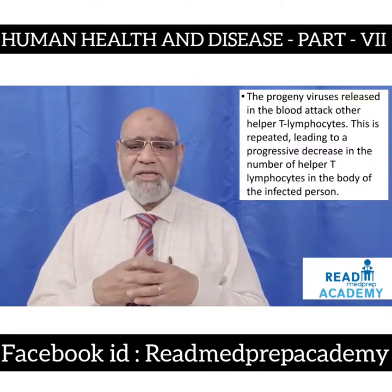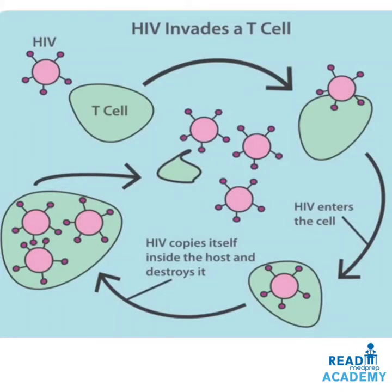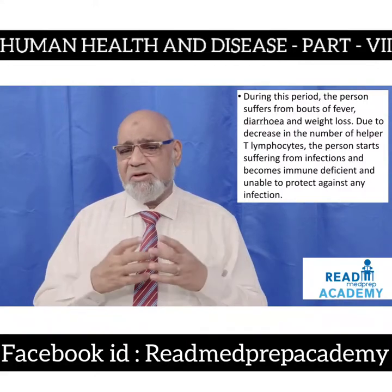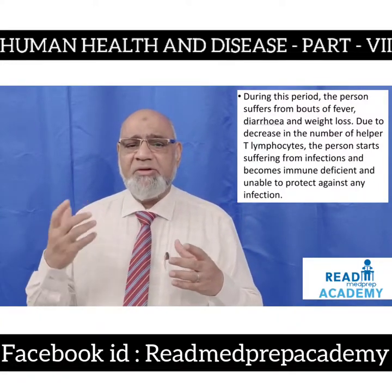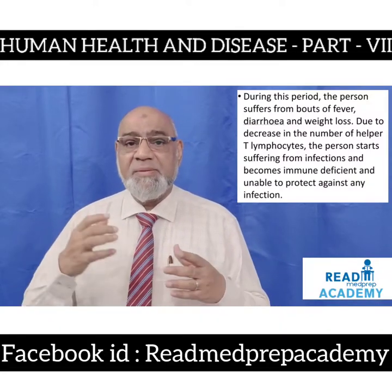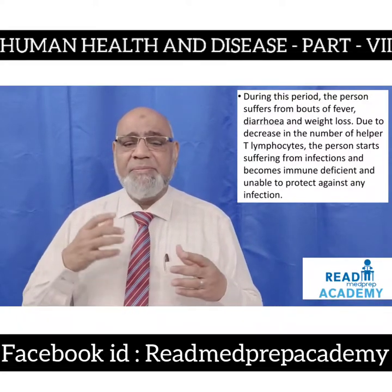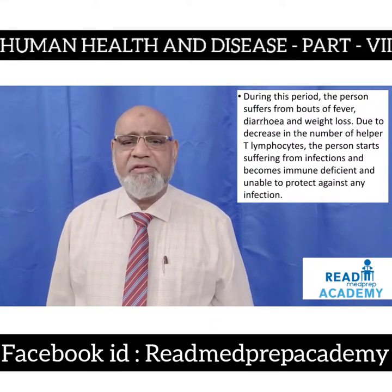The progeny viruses released into the blood attack other helper T cells, leading to a progressive decrease in the number of helper T lymphocytes. HIV invades T cells through receptors on the T cell surface, produces large numbers of viral copies inside the host, and causes lysis of T cells, releasing large numbers of viral particles. Due to the decrease in T cells, there is no stimulation of B cells or formation of antibodies. The person suffers from bouts of fever, diarrhea, and weight loss, becoming immune deficient and unable to protect against any infection.